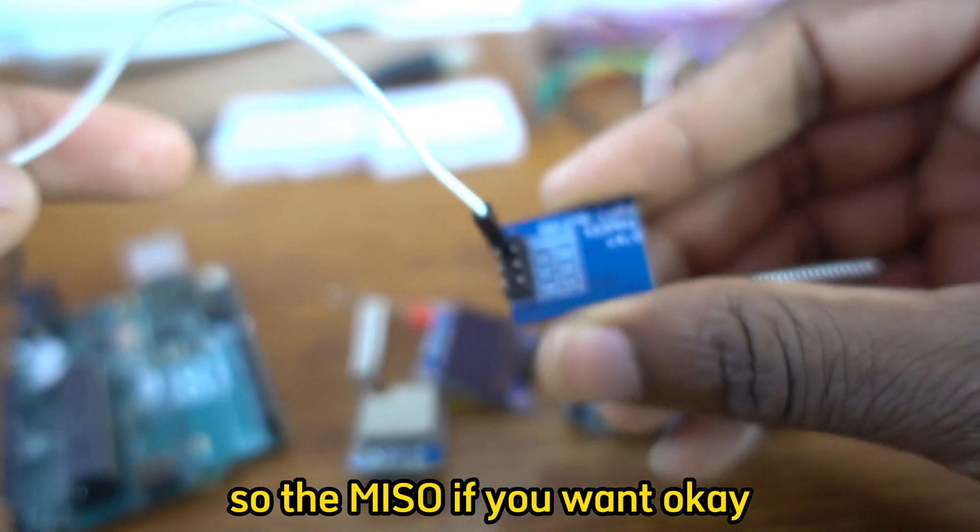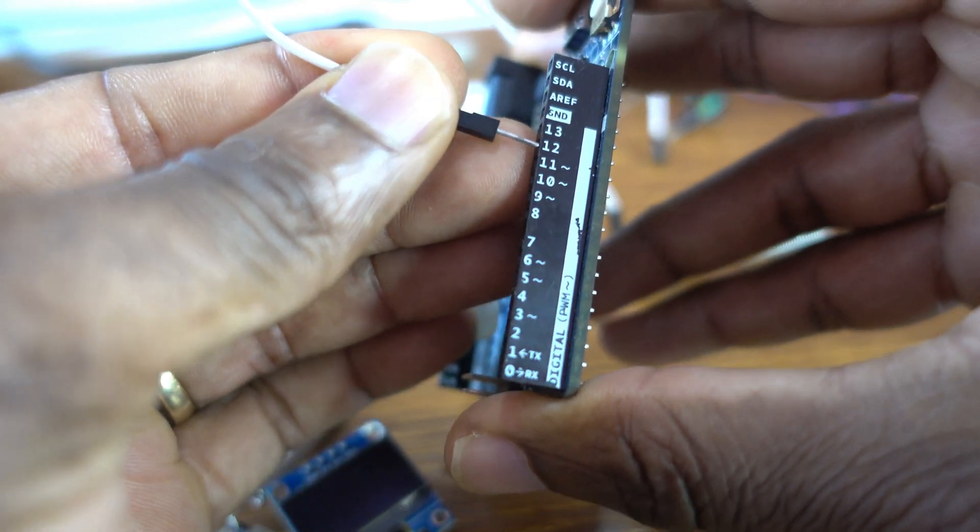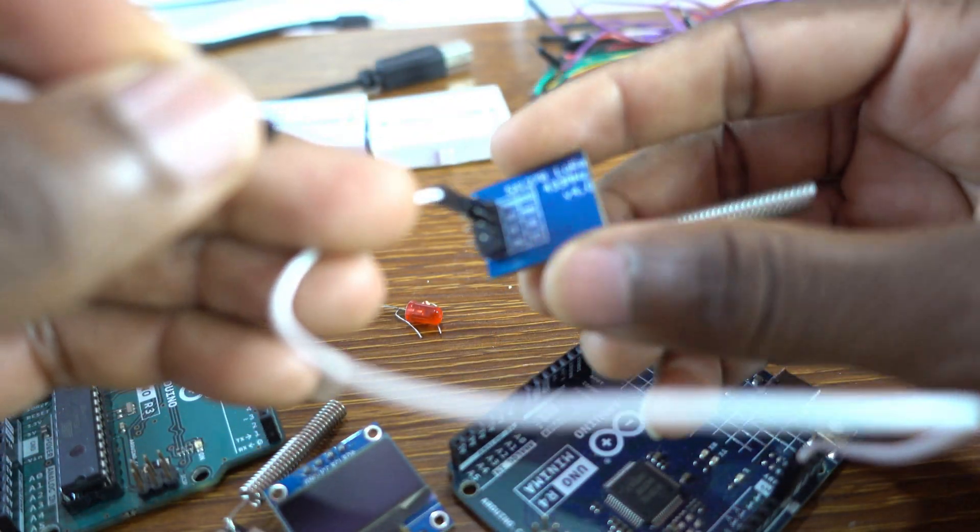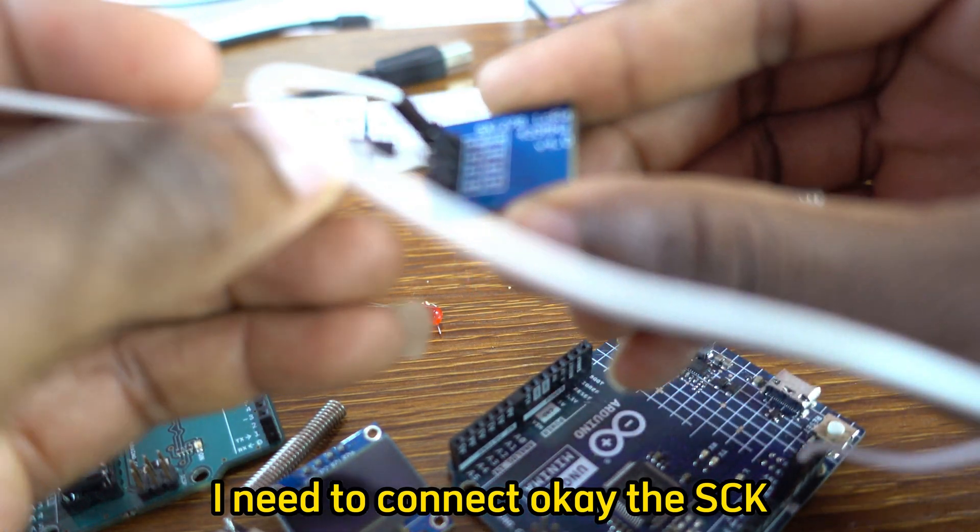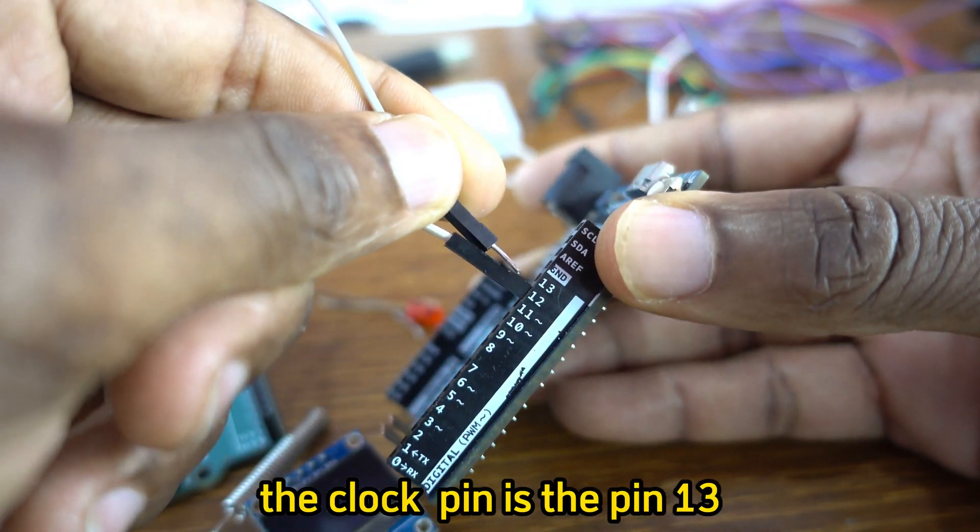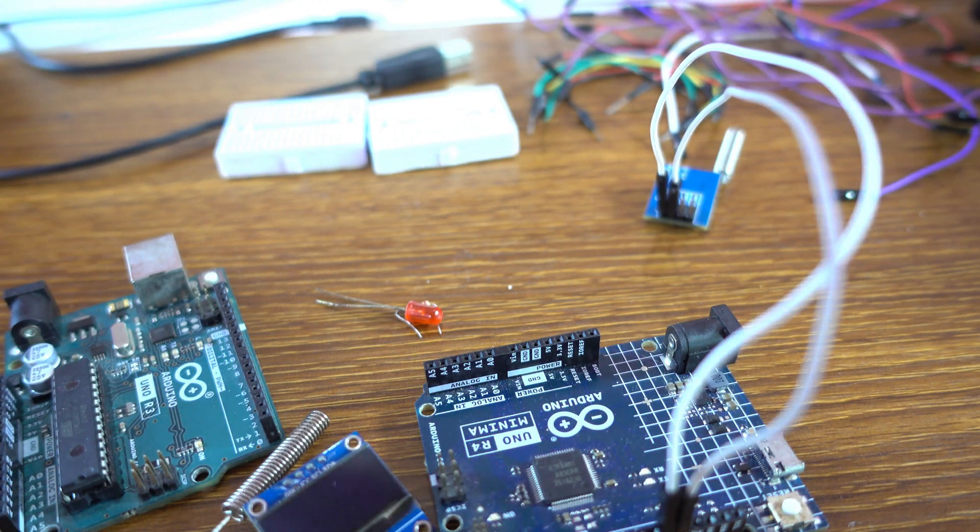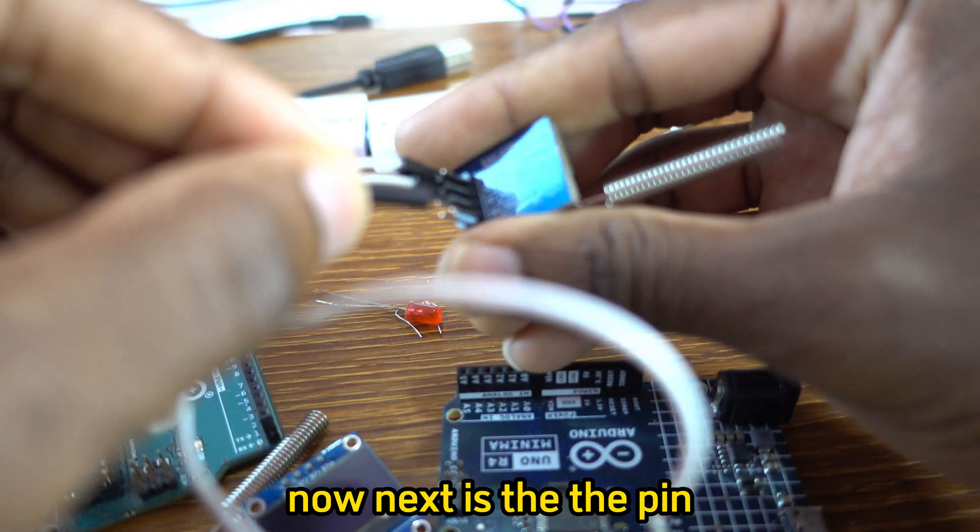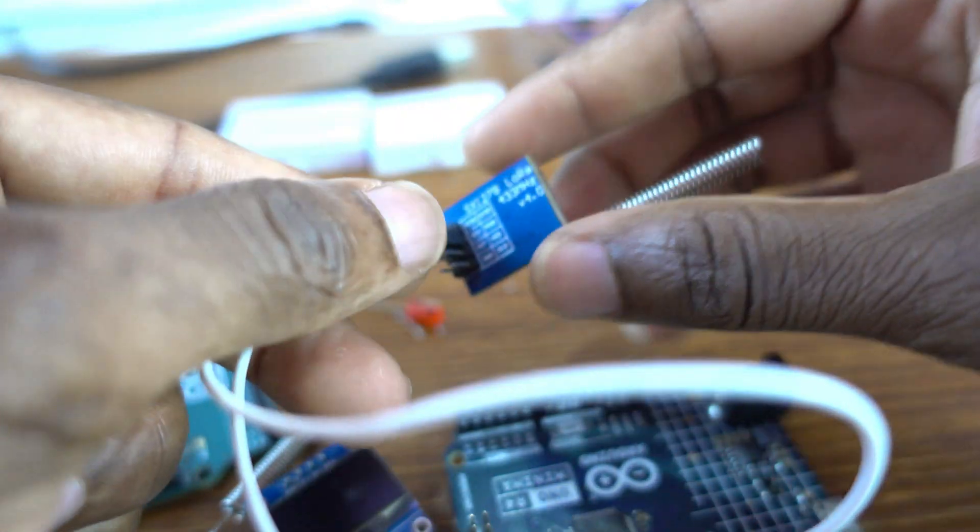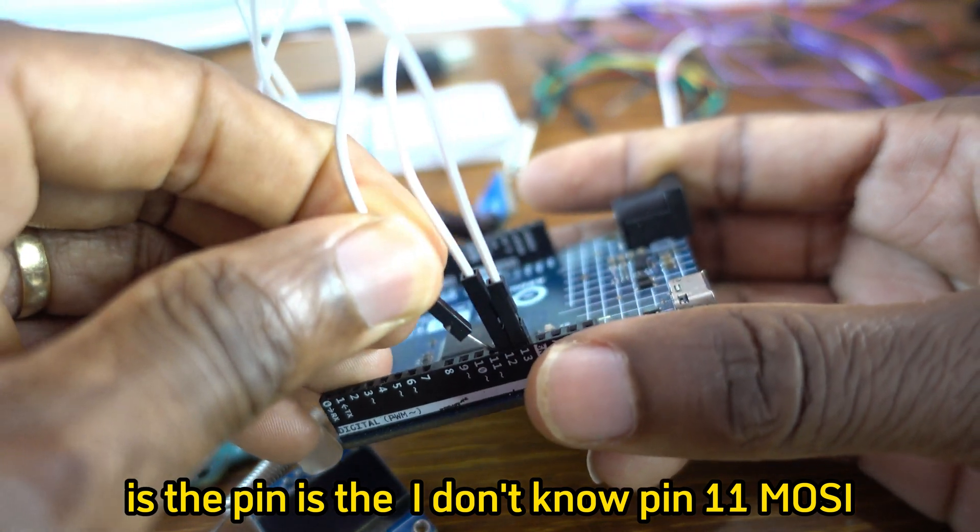So the MISO pin of LoRa is going to Arduino pin 12. And next I need to connect the SCK, the clock pin, is pin 13. Now next is the MOSI pin, I don't know how to pronounce it, MOSI I don't know. Anyways, it's pin 11.